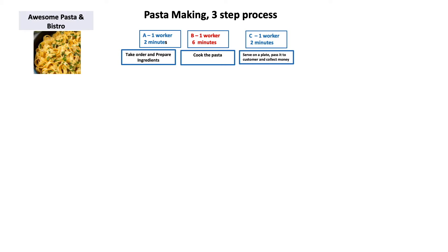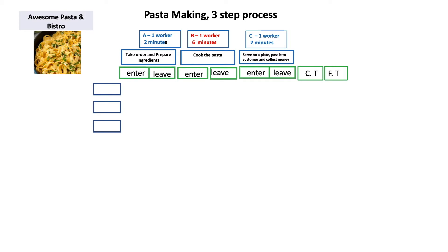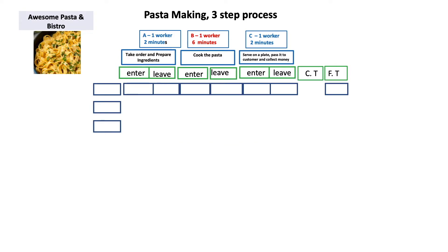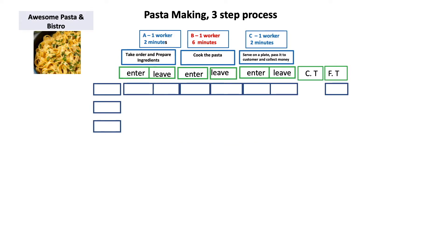The third process step is to serve the cooked pasta on a plate and serve it to the waiting customer. There is one worker here who also collects the money — it takes two minutes at process step C. During lunchtime, customers come and queue up, and let's assume each customer orders just one plate of pasta to keep things simple.